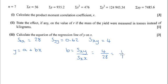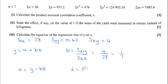a is equal to y-bar minus b times x-bar, where y-bar and x-bar represent the mean y value and the mean x value. So x-bar is going to be equal to all the x's added up, which is 56 divided by 7, which is 8. And y-bar is going to equal 935.2 divided by 7.